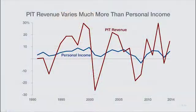Today we'll discuss why California's personal income tax revenue is so volatile compared to its personal income. Here we see the annual percent change from 1990 to 2014 of personal income in blue and in red we have the change in income tax revenue adjusted for policy changes. Personal income is much more stable.